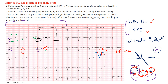So remember, in order to make the diagnosis you need the pathological Q waves and the ST segment elevation. If it's just the ST segment elevation without the Q waves, we would call this a myocardial injury pattern. We're calling it an inferior MI, age recent or probably acute, because you have the Q waves together with the ST segment elevation. The inferior leads are II, III, and AVF — you want two contiguous leads showing these findings.